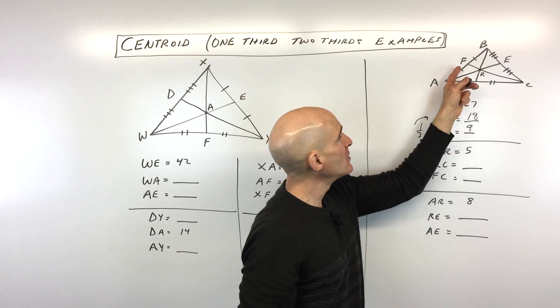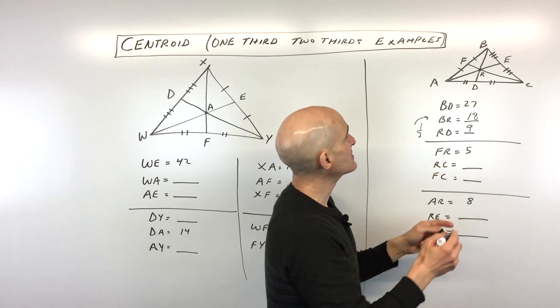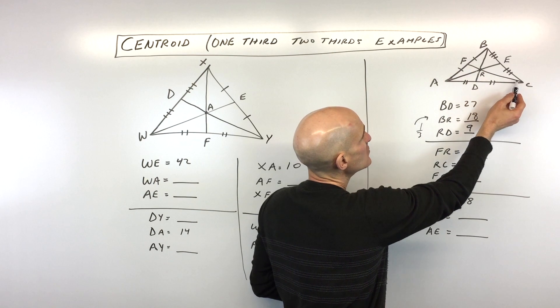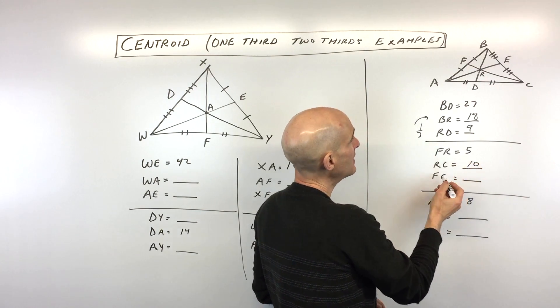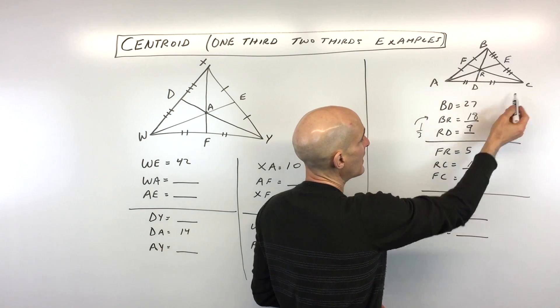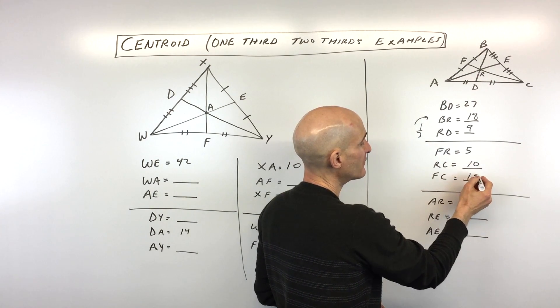Okay, how about FR? So FR, they tell us this length is five. So that means we automatically know that CR is going to be double. That's going to be 10. And then, of course, FC is the whole length. We can add the two pieces together to get 15.